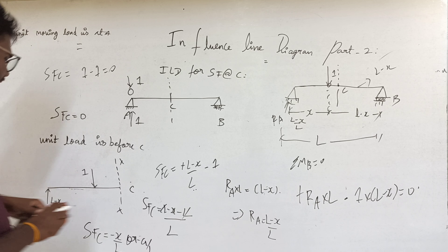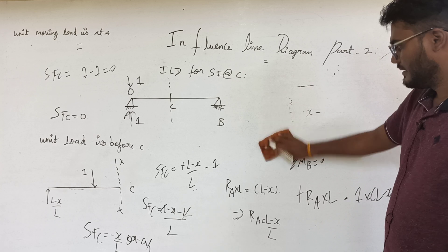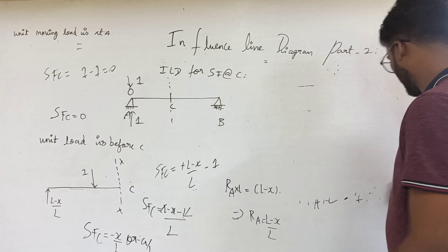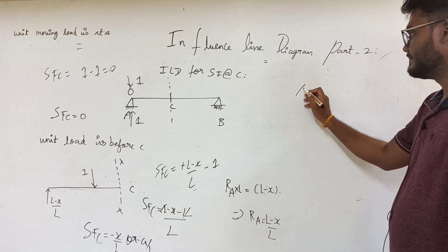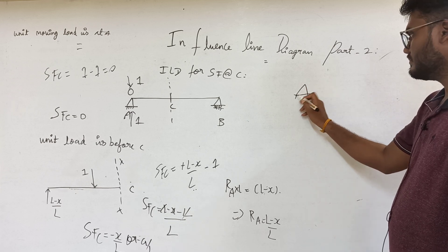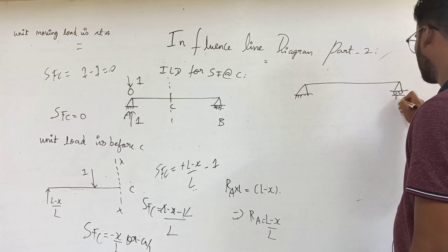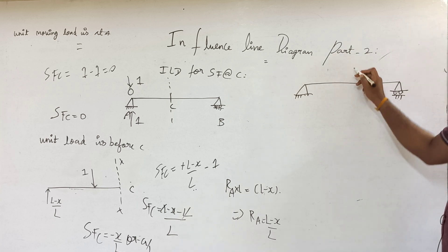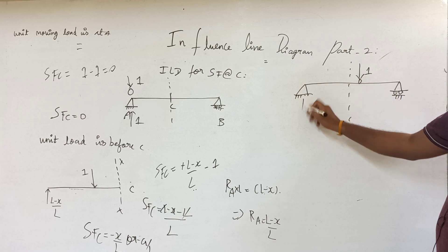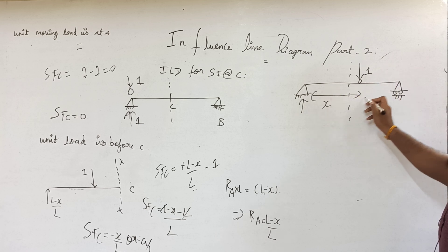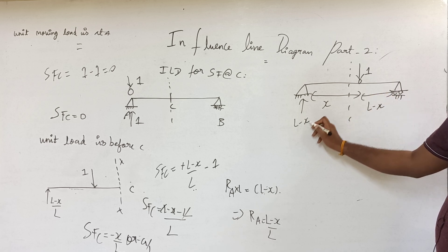Now let us calculate the shear force when the unit load has crossed point C. This is the third case: the unit moving load has crossed point C. This distance is x, and L minus x is the remaining distance. The reaction is (L minus x) by L.